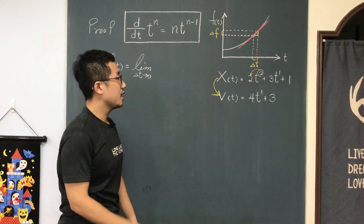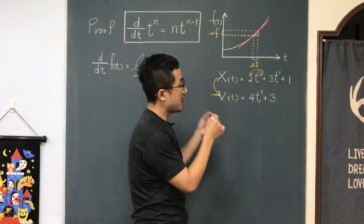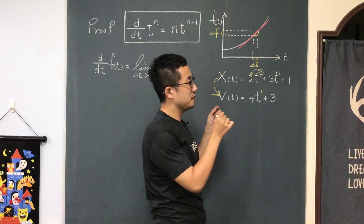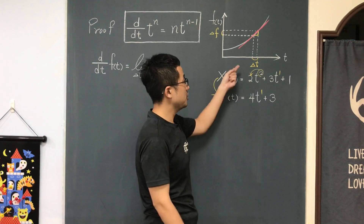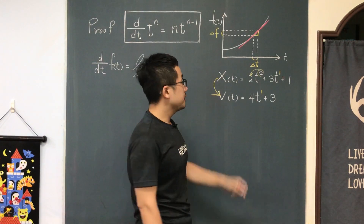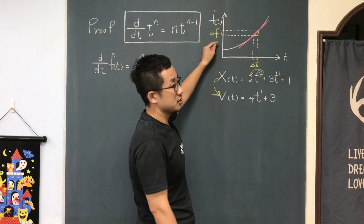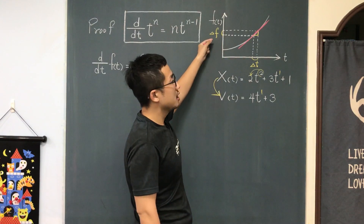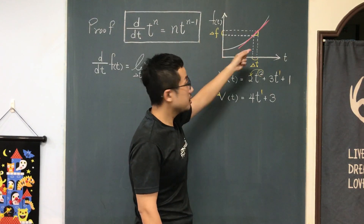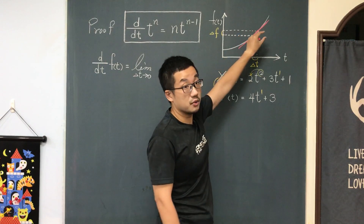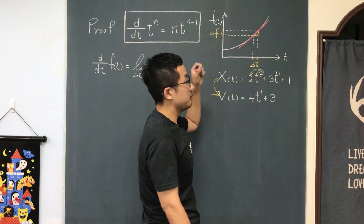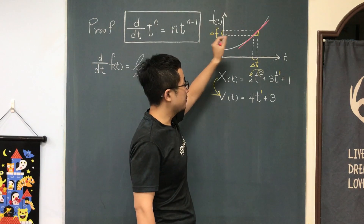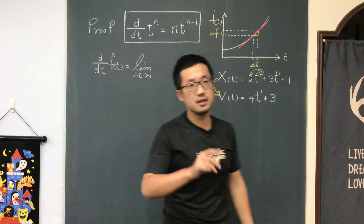That means we now change the time by only a little bit — there is only a very small change in time. While the time is changing, your function f(t) is going to increase a little bit as well. We want to find out the ratio of delta f divided by delta t, by taking the limit as delta t approaches 0.